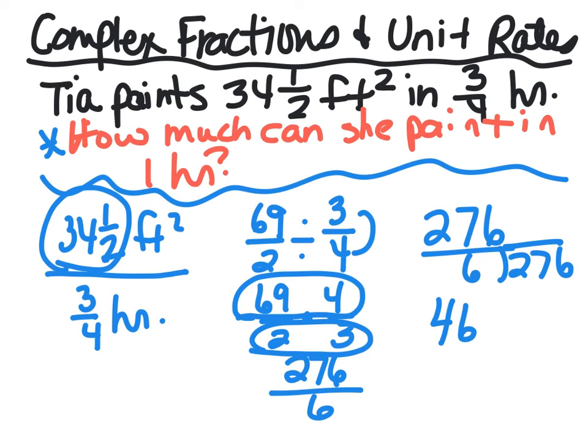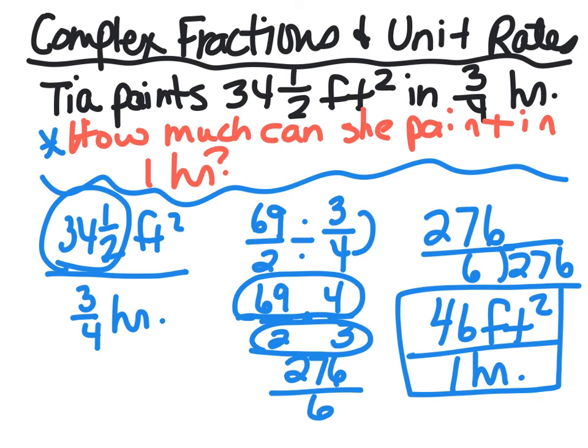But we have to label it because they want to know how much can she paint in one hour. So that's a rate. So she can paint 46 square feet in one hour, and you can also write that a different way, but you have to have it labeled - Tia paints 46 feet squared in one hour. Thank you.